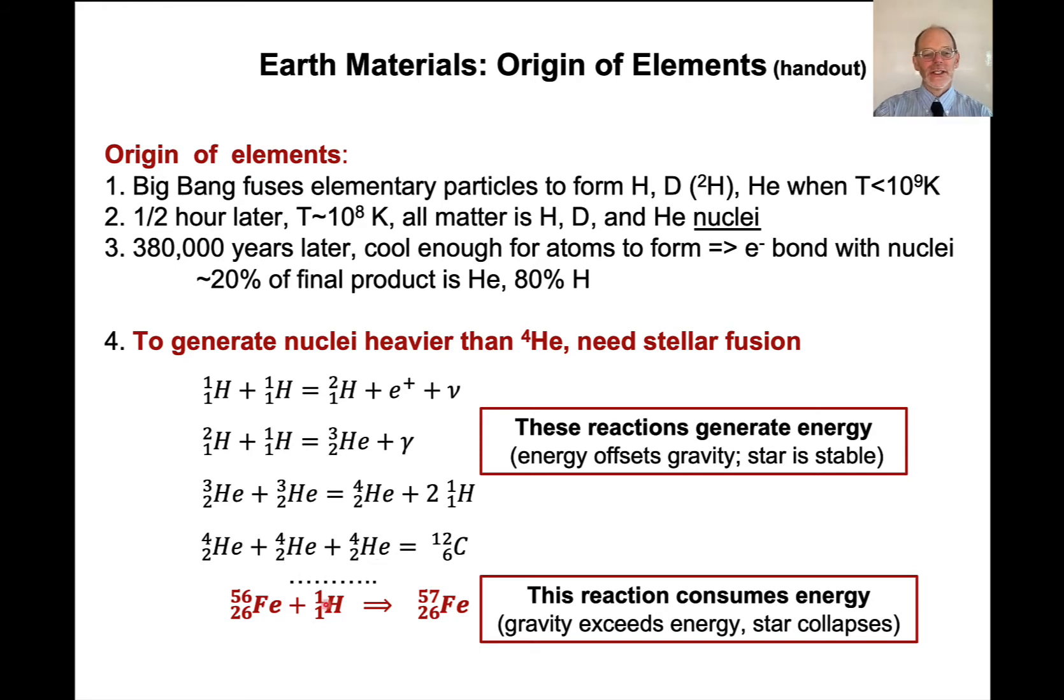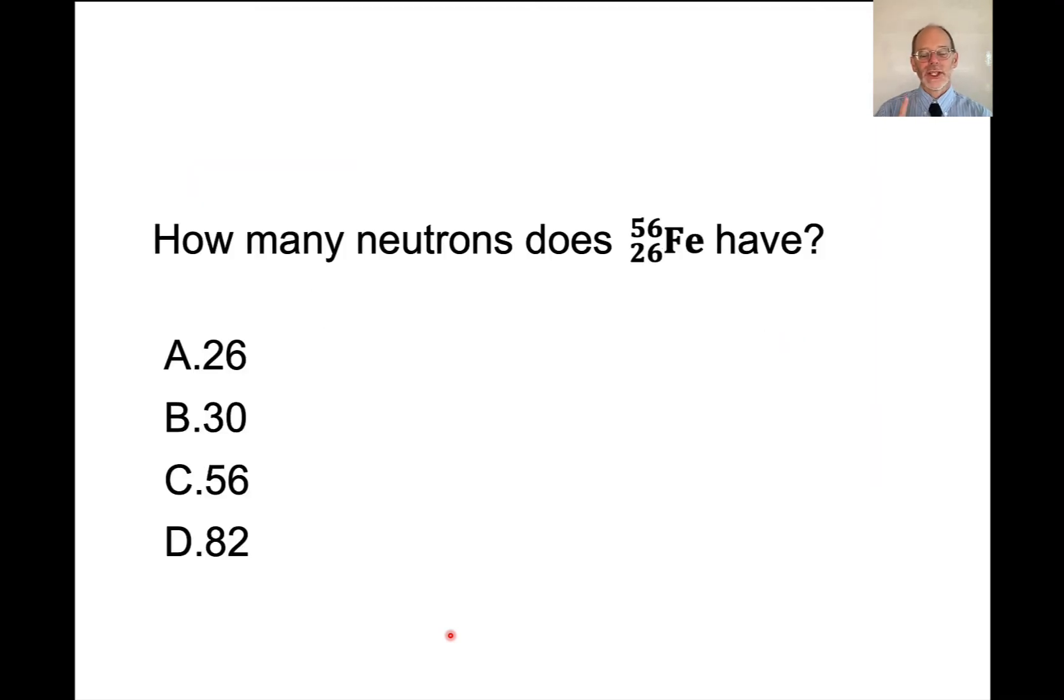That goes on until you hit iron-56. And it turns out that this fusion reaction, iron-56 plus a hydrogen particle to make iron-57, that actually takes energy. So after a star starts to produce iron-56, it's no longer able to create energy from fusion of iron-56, and eventually it will collapse. And that leads to a whole other series of reactions.